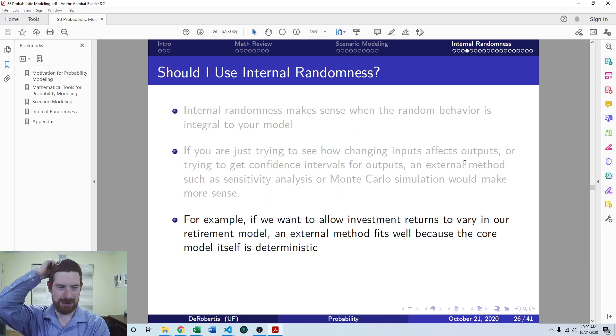So a couple examples there for the retirement model. An external method makes sense to vary the investment return of the model. Because we've already built out the core model, it's already deterministic. So it's much easier to extend it by adding Monte Carlo simulation than to go and kind of rebuild it by using internal randomness.